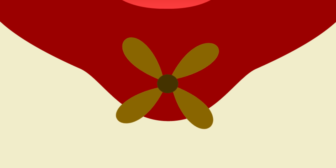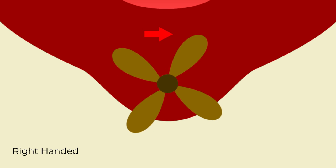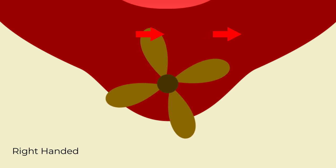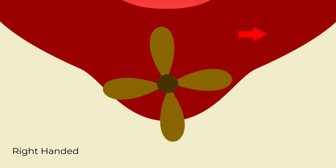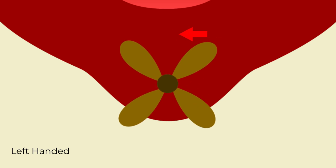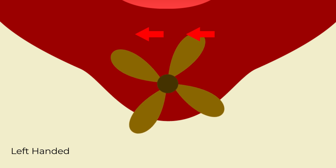To determine whether it's right or left handed, look at your propeller from the stern and see which way the top moves when you're running ahead. If it's spinning clockwise — the top is moving from left to right — you're right handed. If it's moving from right to left, so anti-clockwise, then you'd be left handed.